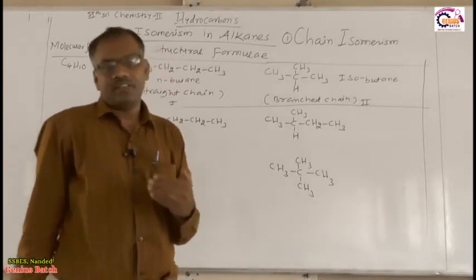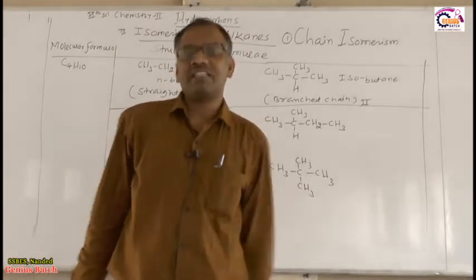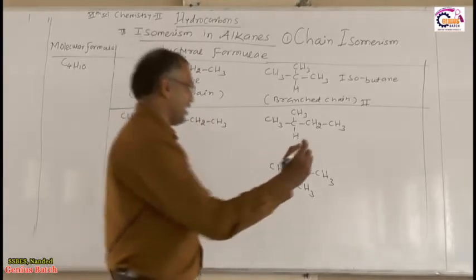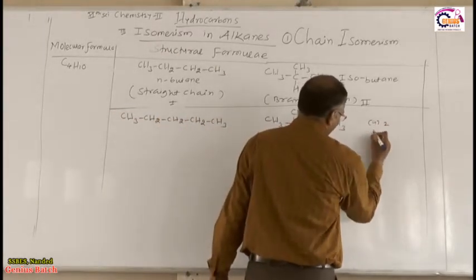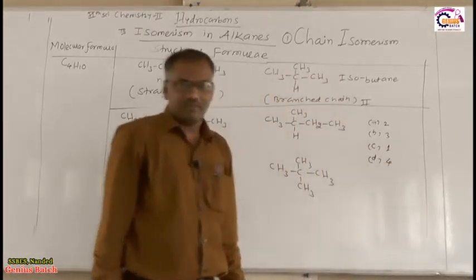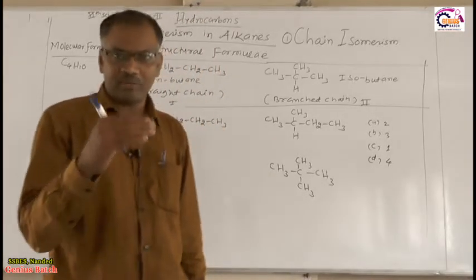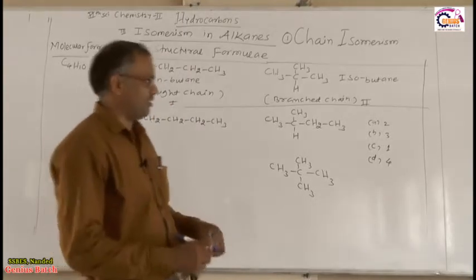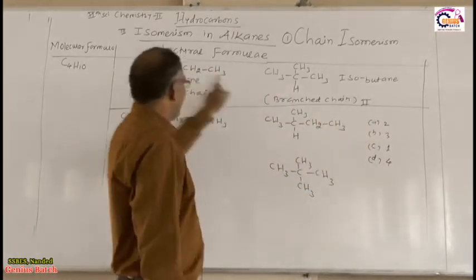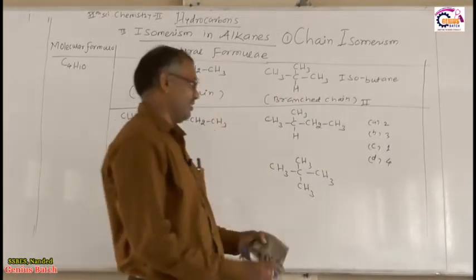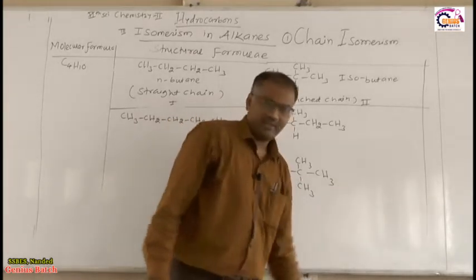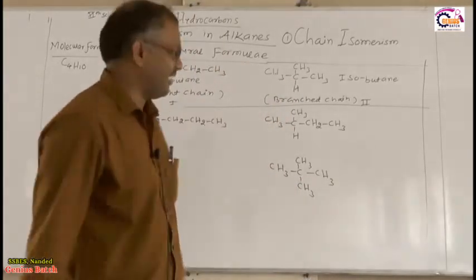In the JEE or NEET exam, a question may be asked like this: The compound having molecular formula C4H10 has how many chain isomers? Option A: 2, B: 3, C: 1, D: 4. The answer is A — two chain isomers — because this compound has exactly two chain isomers: n-butane and isobutane. Such MCQ questions may be asked in NEET or JEE.